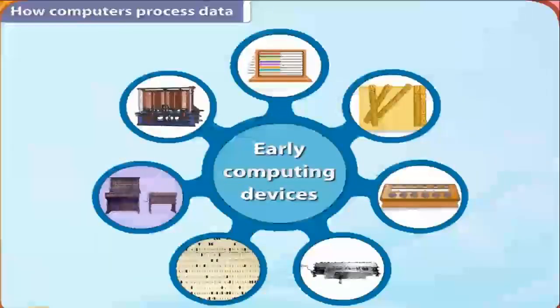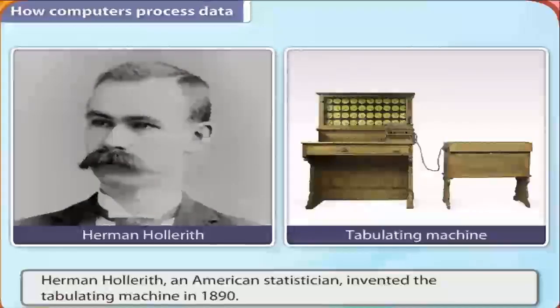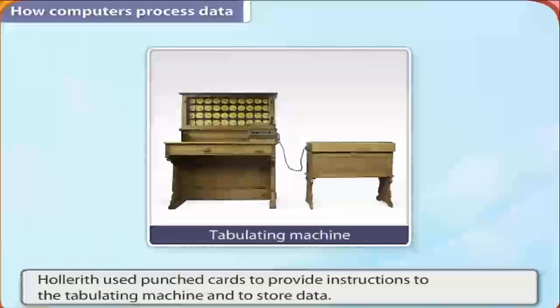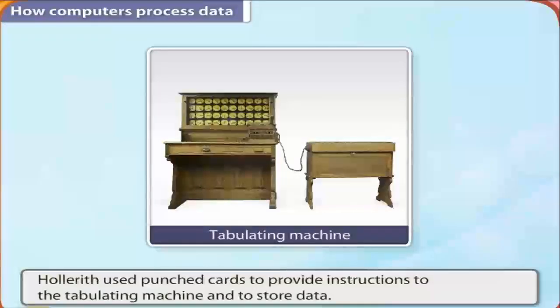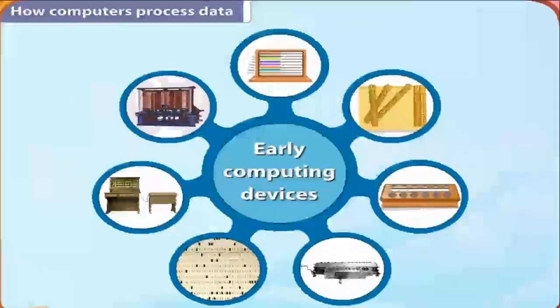In 1890, Herman Hollerith, an American statistician, invented a machine called the Tabulating Machine. Hollerith used punched cards to provide instructions to the tabulating machine and to store data. This method introduced the concept of storage devices which led to the evolution of modern computers.